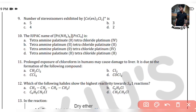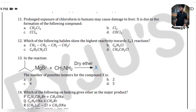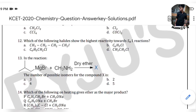Question 12: which of the following shows the highest reactivity towards SN1 reaction? The answer is option C, which is C6H5CH2Cl (benzyl chloride). The rate of SN1 reaction is determined by the stability of the carbocation intermediate. Here the most stable intermediate would be the benzyl carbocation C6H5CH2+, stabilized via resonance.